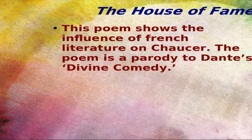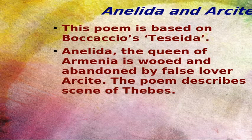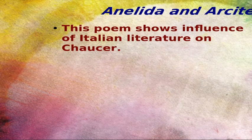The next important work is Anelida and Arcite. It is based on Boccaccio's work, the Teseida. The story of the poem describes a scene of Thebes where Anelida is wooed and abandoned by a false lover, Arcite. It shows the Italian influence on Chaucer. It contains the lovers' complaint motif, and the poem contains a strophe, antistrophe, and conclusion.